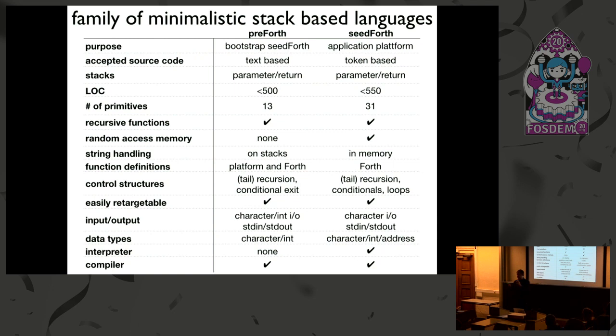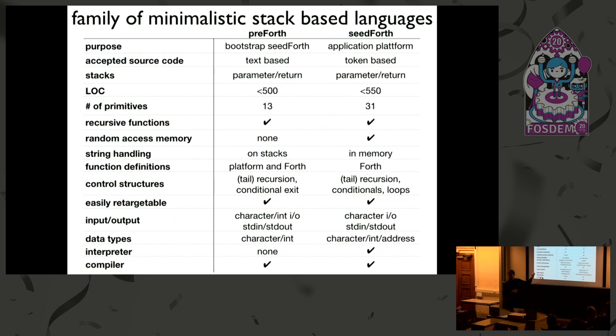Another key feature is the number of primitives. PreForce has 13 primitives, meaning many features are missing — like memory. It doesn't have addressable memory; it has to do everything on two stacks, one for parameter passing and the other for function call and procedure return addresses. If you want to do string handling, you do it all on the stacks — no memory representation of strings. You put them character by character on the stack. PreForce doesn't have any control structures either. The only thing is a procedure call with possibly tail recursion elimination and a conditional exit, and then you formulate whatever programs you want.